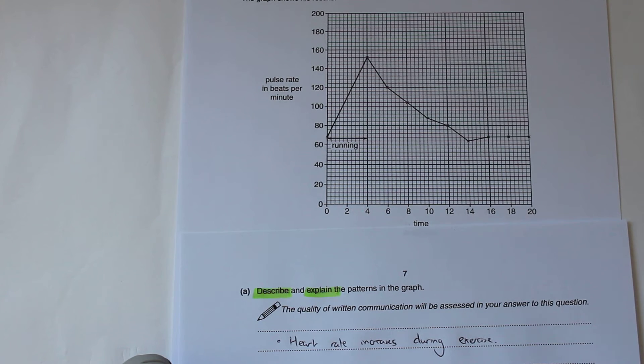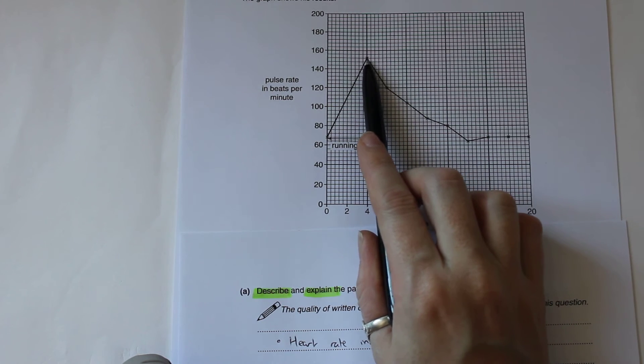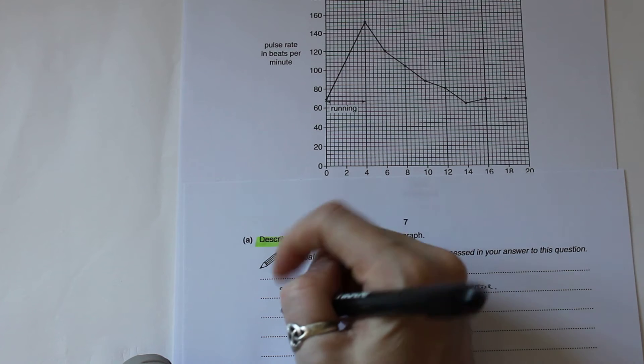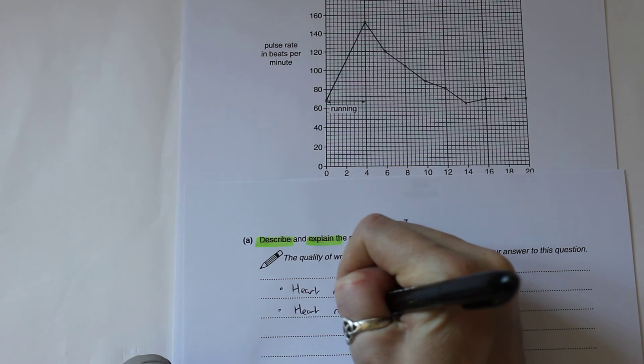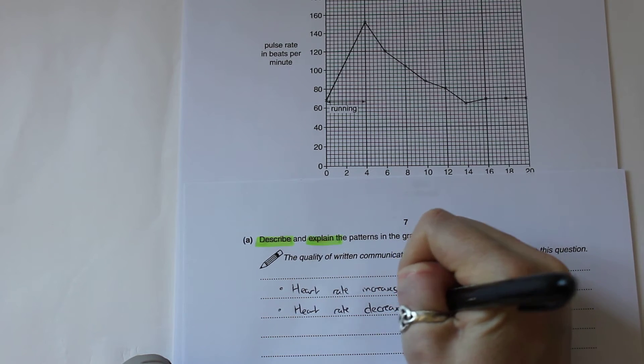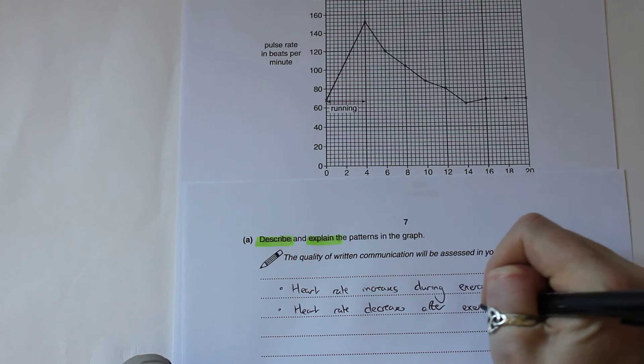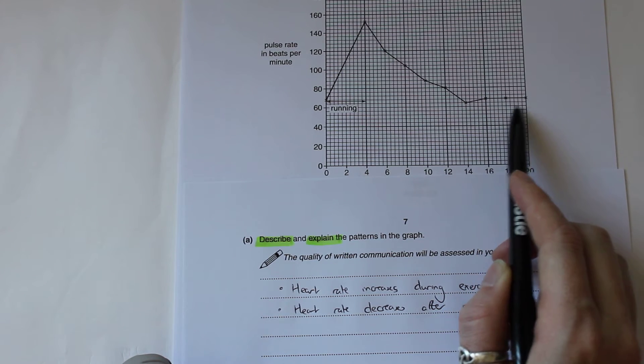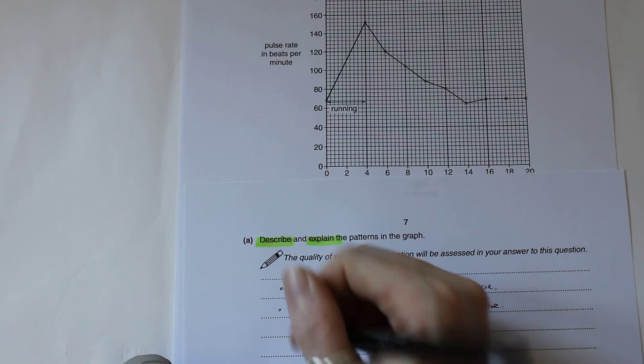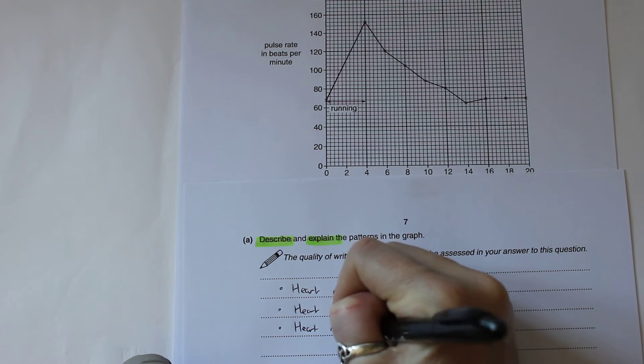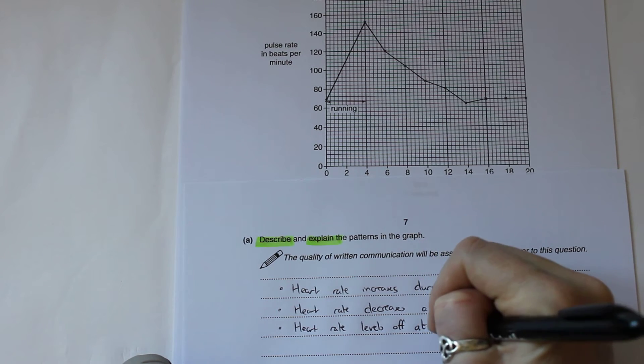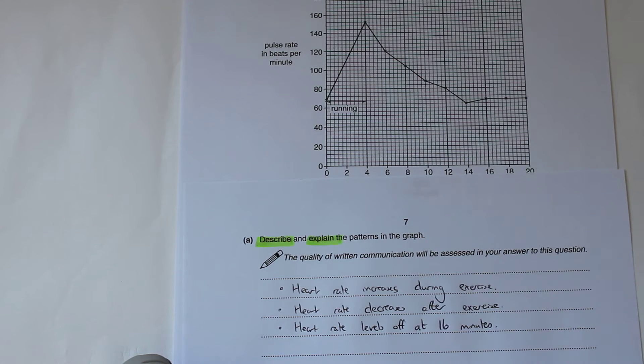We've talked about that first bit and then we're going to come on to describing the next bit. When he's finished exercising we can see that there is this decrease. So our second point is that heart rate decreases after exercise. The last thing to notice on our graph is all the way over here from 16 minutes onwards we have a horizontal line, so it's leveled off. The heart rate levels off at 16 minutes.